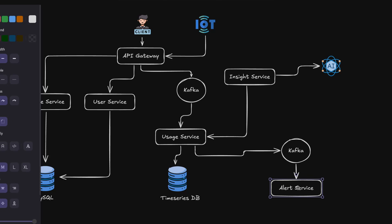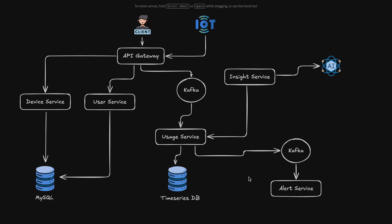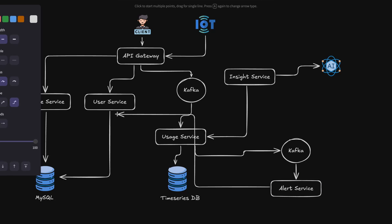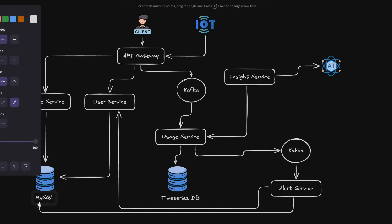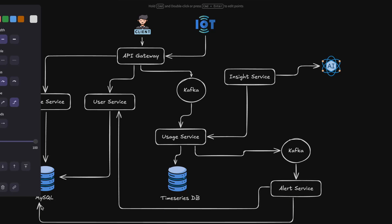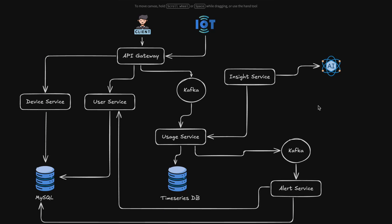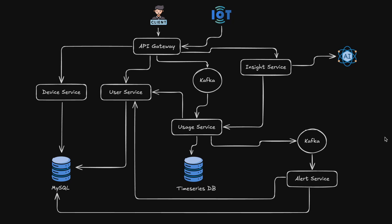The usage service will have a scheduled job that runs periodically and checks if a certain usage threshold has been met. If that is the case, we send a trigger to the alert service, which goes to the user service to get the user's email. We then send the email, and inside MySQL we save it as an audit entry for auditing purposes.